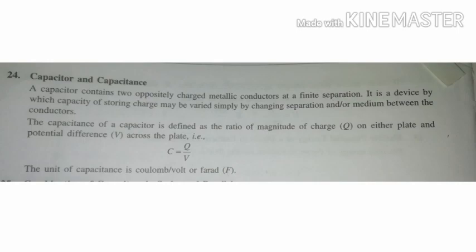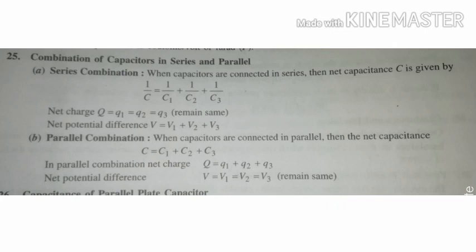Capacitance. Combination of capacitors in series and parallel. The series combination is 1 by C equal to 1 by C1 plus 1 by C2 plus 1 by C3. In the series combination, the charge remains the same. In the parallel combination, the potential difference is the same.